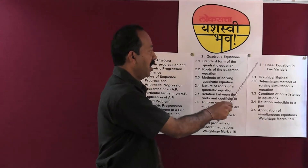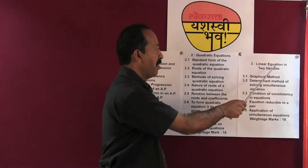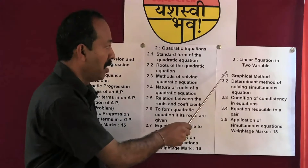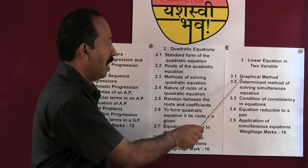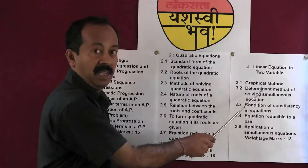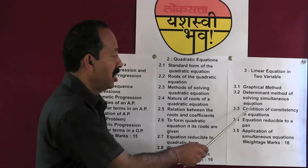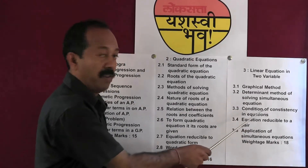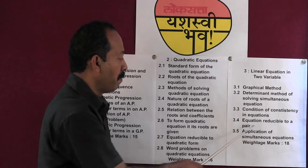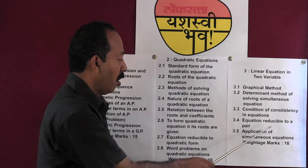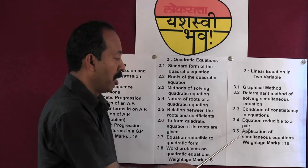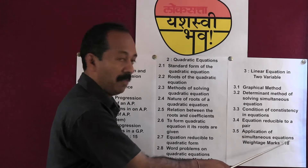Chapter 3: the name of the chapter is Linear Equations in 2 Variables. The important contents are: Graphical method, Determinant method of solving, Simultaneous equations, Condition of consistency in equations, Equation reducible to a pair, and Application of simultaneous equations. The weightage for this chapter is 18 marks.